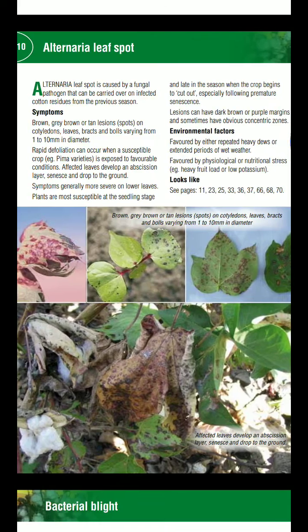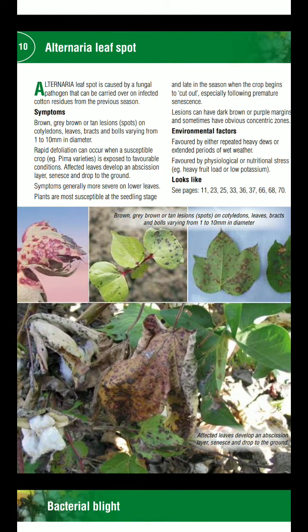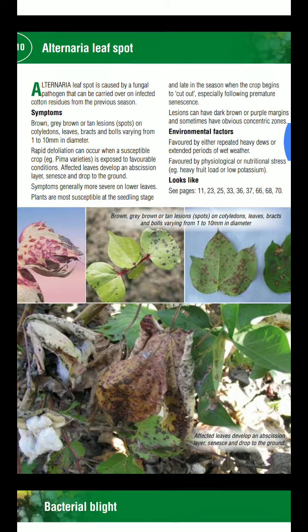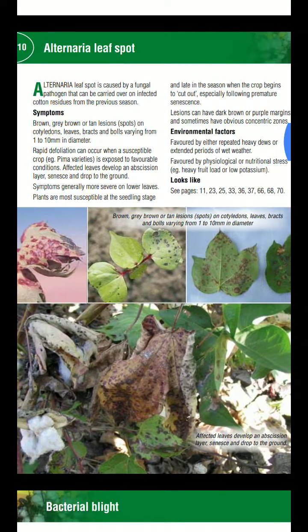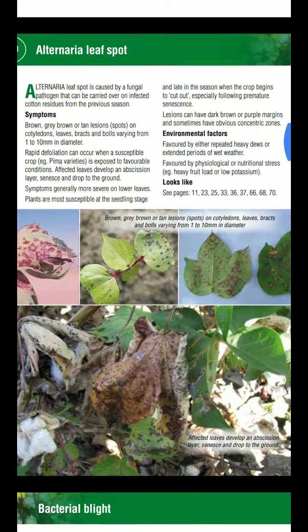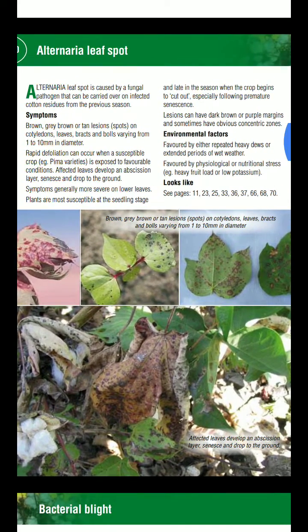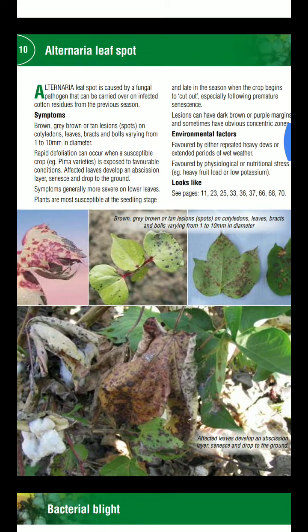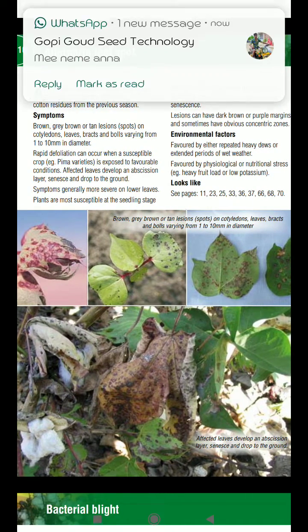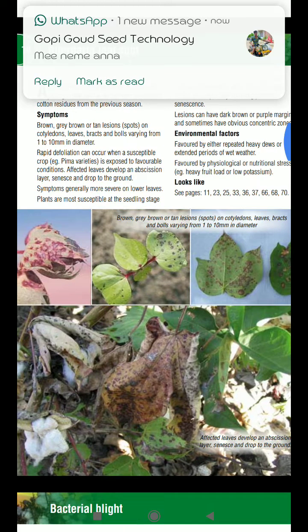Symptoms appear mostly at the seedling stage rather than the late stage. It appears as brown, gray, and tan lesions on cotyledons and leaves, as well as on bracts and bolls.